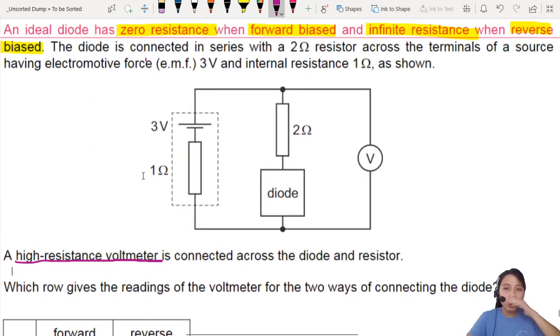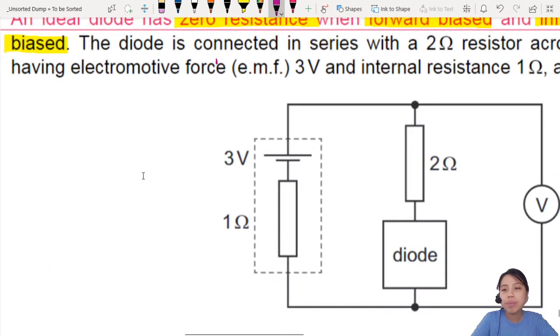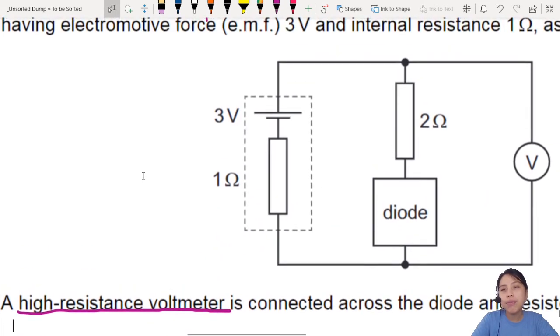So forward and reverse. Let's go through step-by-step to look at forward biased first. When we say forward biased, what we mean is that you look at this cell, right? It's going to try to push current in this direction. Will current go through the voltmeter? No. It's very high resistance, so it's probably negligible or no current flowing through that. So all the current is going to go down here and back.